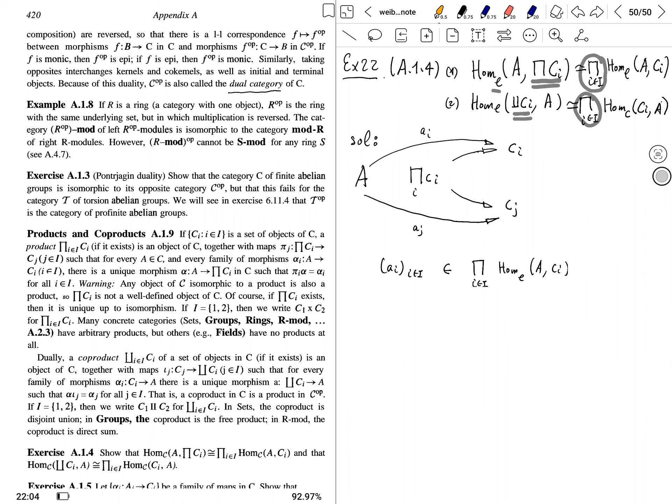And then the universal property is saying that there exists a unique map from A to this product. So mapping to this unique map A, which is homomorphism in category C from A to this existing product of C_i. And this is bijective of sets because there is one-on-one correspondence. Because there exists a unique map.